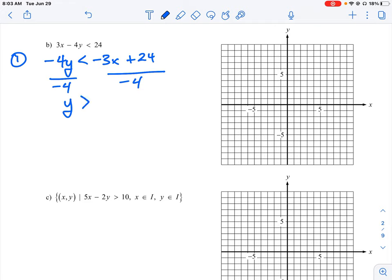So this is now greater than, and then we are going to work out our slope and intercept points here. So we have negative 3 over negative 4, which is 3 quarters x, and we have 24 divided by negative 4, which is going to give us minus 6.